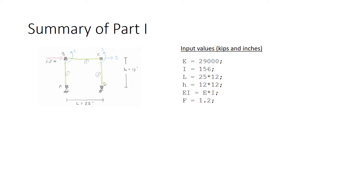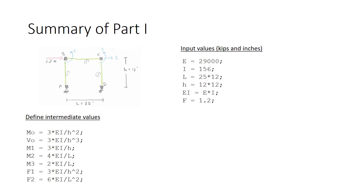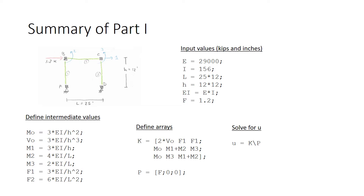This is the problem as I've solved it in MATLAB. We entered the input values for modulus, moment of inertia, dimensions, and the force at the top. When we moved each degree of freedom in turn holding the other degrees of freedom fixed, we generated member forces, moments, and shears on the various members. We then used these values to define the stiffness matrix and the force vector. We calculated u equals k inverse p to find the vector of nodal displacements, and these were the values we got. That first number, 0.2695 inches, is the deflection at the top — we see how that value comes out naturally from the stiffness method.